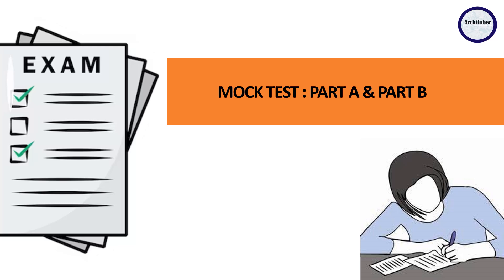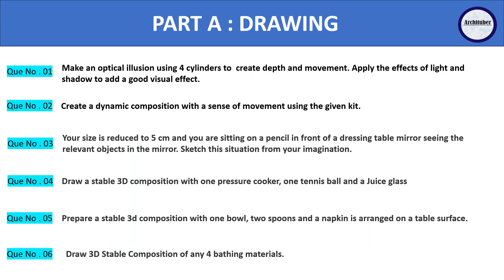For this mock test you have Part A and Part B both, so try to solve all of the questions. If you want to send me your drawings, logos, or compositions, you can send me on my email address — I will link the email address in the description box below. Now discussing about Part A questions, we have six different types of questions. One is to make an optical illusion using four cylinders to create depth and movement, and to apply the effects of light and shadow to add a good visual effect. Light and shadow plays a very important role, so try to add light and shadow in all your drawing compositions if asked.